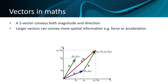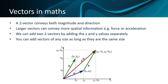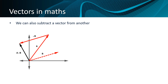We can add two vectors by adding the x and y values separately. You can add vectors of any size, as long as they contain the same number of elements. We can also subtract a vector from another vector, which is essentially the same as adding the inverse of that second vector to the first vector.